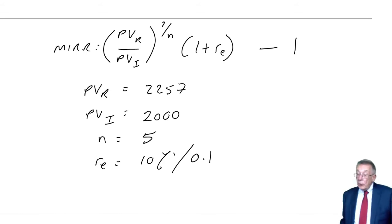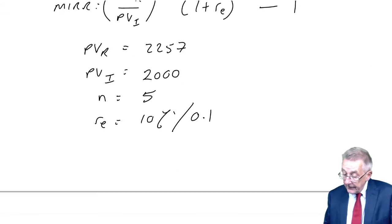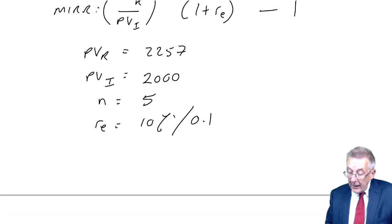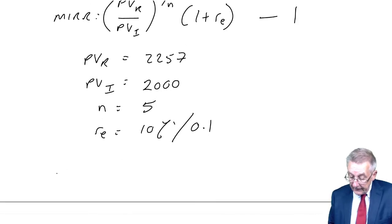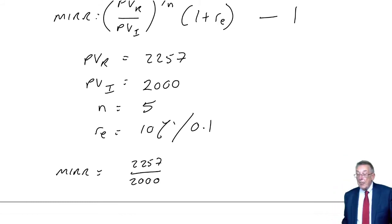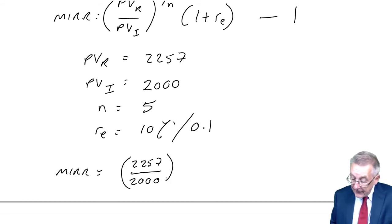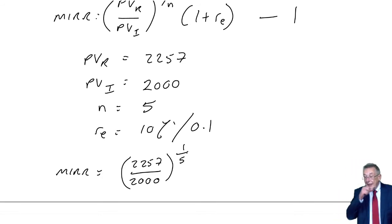It's now just sticking into the formula, but make sure you are clear what's happening. PVR over PVI is 2257 over 2000, to the power 1 over N, 1 over 5.